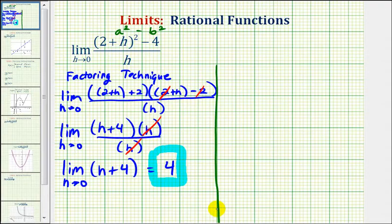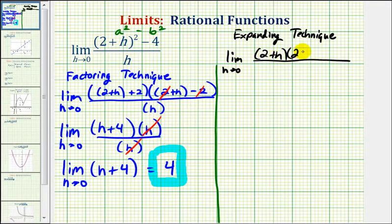Now let's take a look at a second method to determine the same limit. Instead of factoring this, we could expand the numerator, and then try to simplify. So we'd have the limit as h approaches zero of two plus h times two plus h minus four, all over one factor of h.